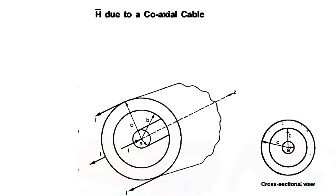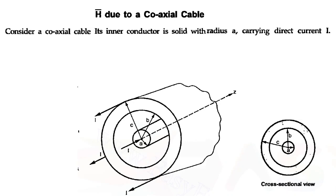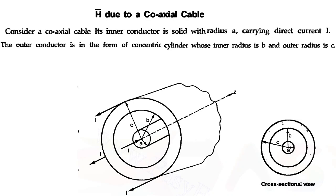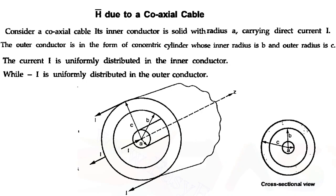We take the radius of the inner conductor as A. The radius of the outer conductor starts at B and the outer radius is C, so between A and B we have the dielectric material. The thickness of the outer conductor is B to C. The inner conductor has radius A carrying current I, and the outer conductor carries current minus I.